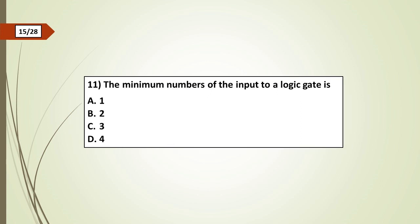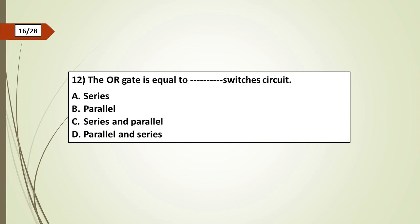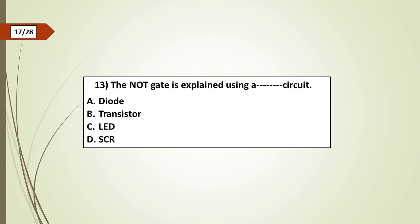Eleventh question: The minimum number of the input to a logic gate is: a) 1, b) 2, c) 3, d) 4. Twelfth question: The OR gate is equal to dash switch circuit: a) series, b) parallel, c) series and parallel, d) parallel and series.